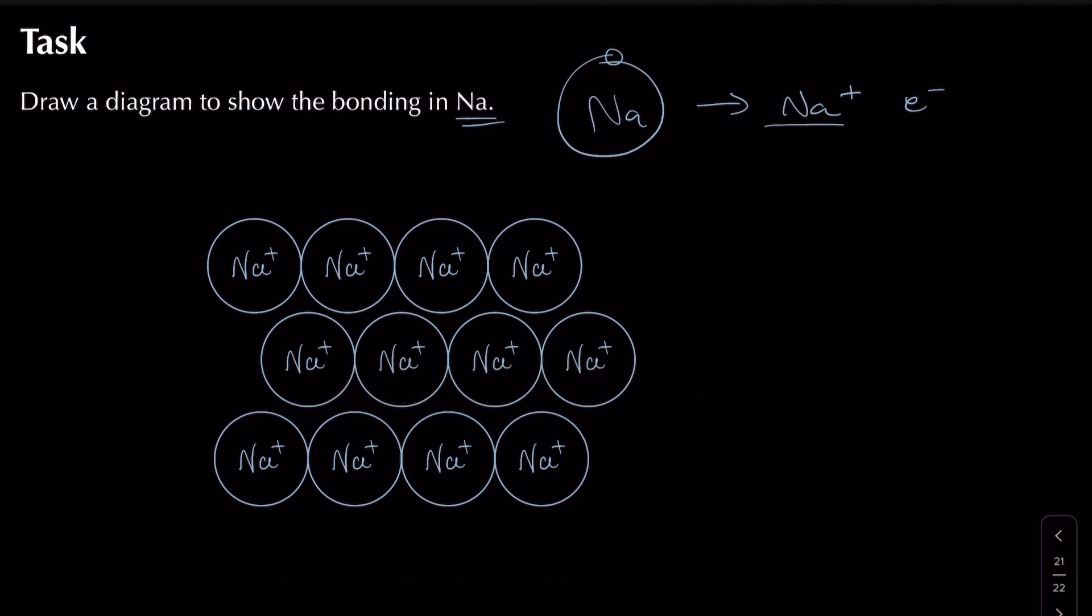They're loosely together, they don't have to be completely joined, and we end up with in this case 12 electrons because we've got one electron released per sodium atom to make sodium ions. There's my 12 electrons and now I need to give some labels.